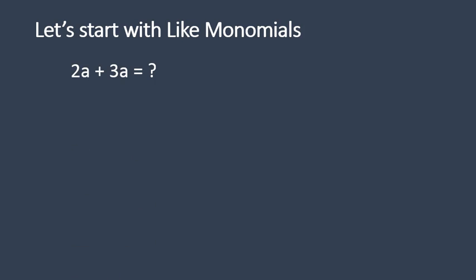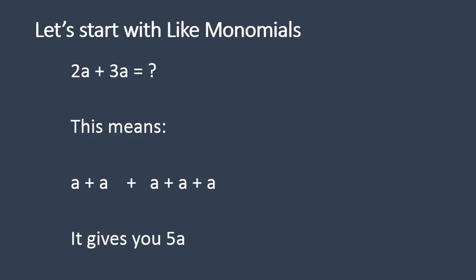We're going to look at two different types of terms. First we're going to start with like terms or like monomials. An example of that is 2a plus 3a. When we break that apart, 2a means a plus a, and 3a means a plus a plus a. So when you add them all together, a plus a plus a plus a plus a, you'll get 5a. When you have like monomials with the exact same variable, you can add them together and join those like terms to give yourself a more simplified term.